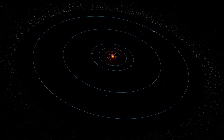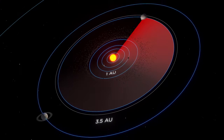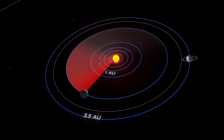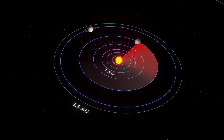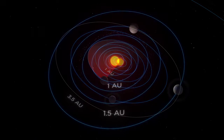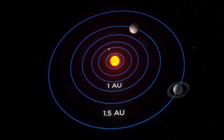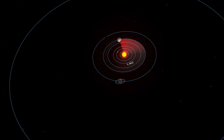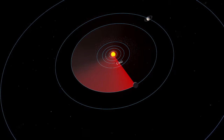As Jupiter migrated inward, Saturn followed right behind. By the time Jupiter reached the 1.5 AU point, it captured Saturn in an orbital resonance: while Jupiter made 3 circles around the Sun, Saturn made 2, affecting Jupiter with its gravity. Meanwhile, the gas between the two planets expelled. As a result, both gas giants stopped their migration and reversed direction, moving away from the center of the solar system — until Jupiter ended up at its current orbit of 5.2 AU and Saturn at 7 AU.